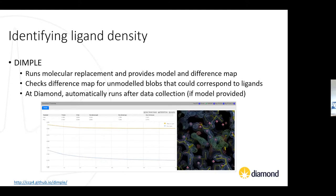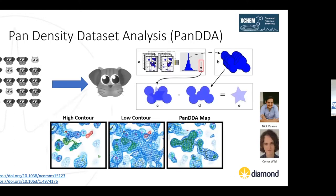In order to identify ligand density we use a software package called Dimple. This is a straightforward package that runs a molecular replacement — it takes a model of our protein and our experimental data and provides difference maps. This is an example straight off the beamline at Diamond, where the green density corresponds to ligand binding. It's a really fast way to check if there's density that isn't modelled with the model we put in at the start.